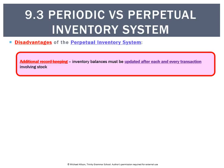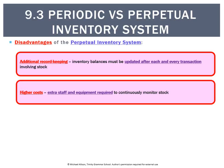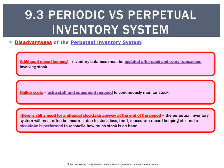There are some disadvantages though. There is additional record keeping — in the real world this requires a lot of equipment, computers, and security tags. Because we're updating inventory balances after every single transaction, that's a lot of record keeping, and whenever there's more record keeping there's more cost — we might need extra staff and equipment. At the end of the period, another disadvantage is we're still going to do a stock take anyway in the perpetual system, so one might question whether all that work during the period is truly necessary.